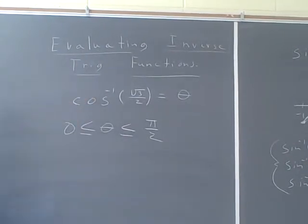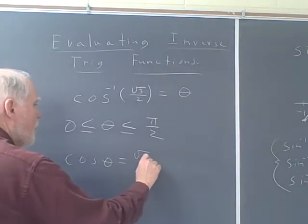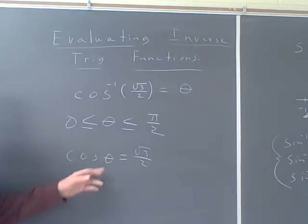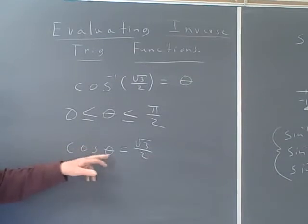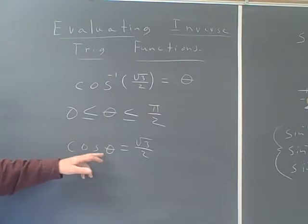What else do we know about theta? Well, that the cosine of theta equals root 3 over 2. And we know that the angle that's true, that makes that true, the cosine of theta equals the square root of 3 over 2, it's a common angle.